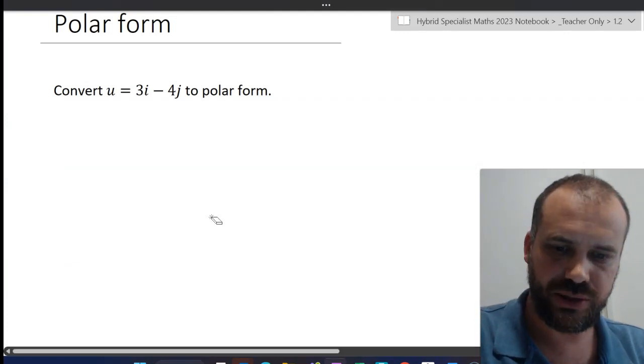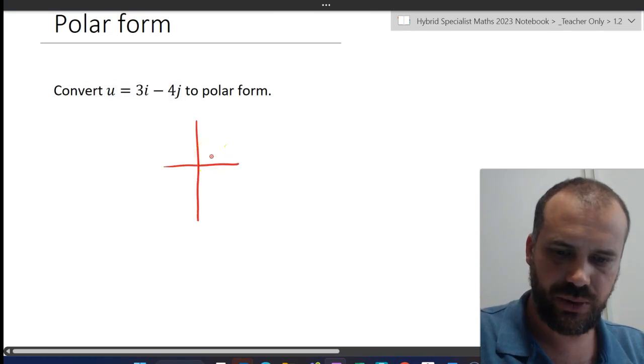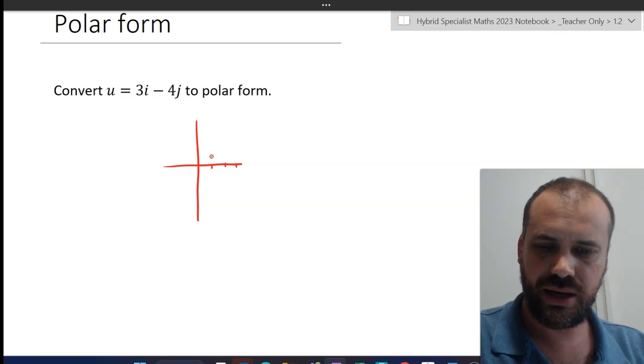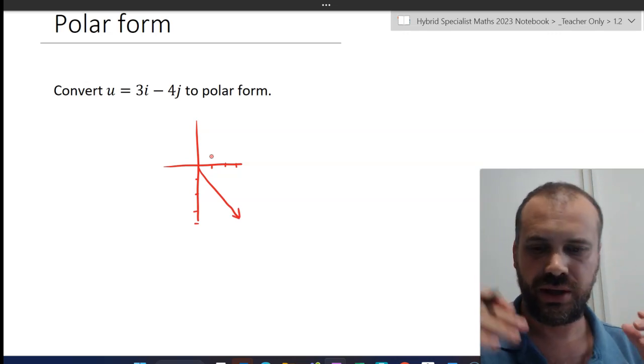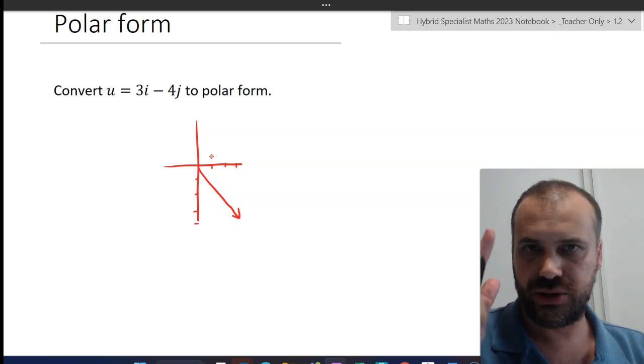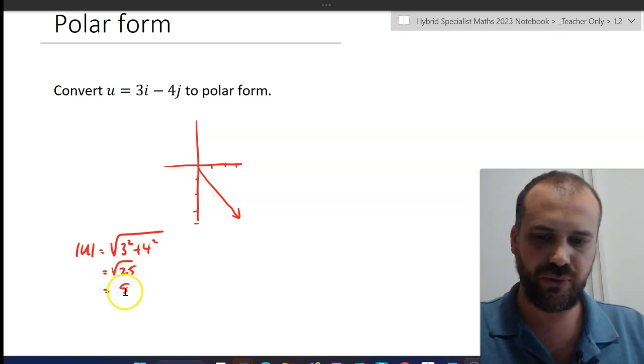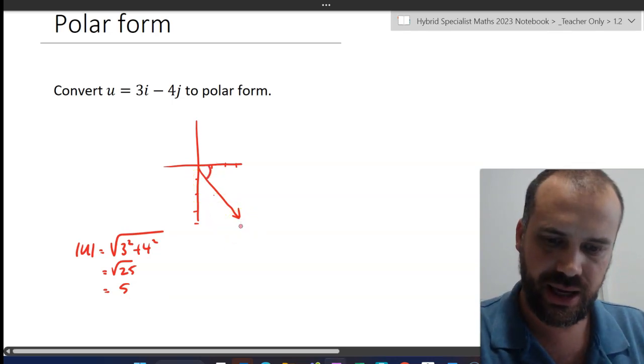All right, so here we are, we're going to convert this to polar form. The first step is always, always, always to draw a picture. So I'm going to draw in a convenient x and y axis here, 3i, 1, 2, 3 and negative 4j, 1, 2, 3, 4 and that is the vector I'm dealing with. Now to convert to polar form I need two things. I need the magnitude, which is easy enough. You've done that lots before, I'm not going to show you how to find the magnitude of a vector. The other thing we need is this angle